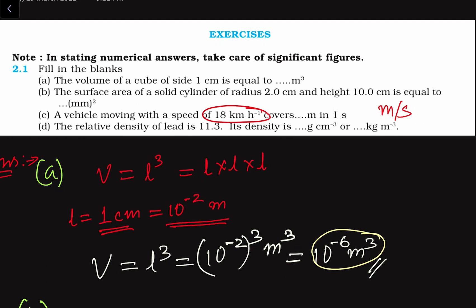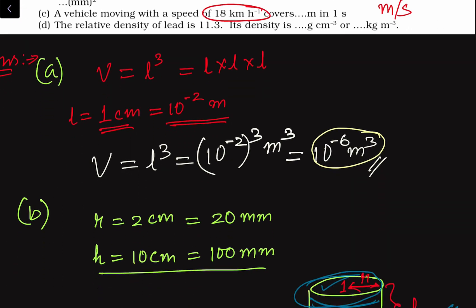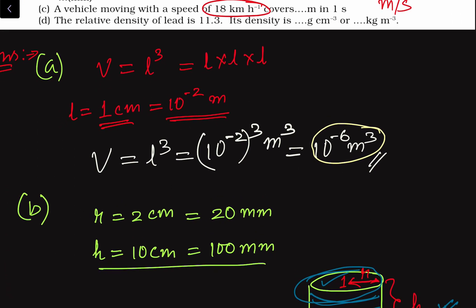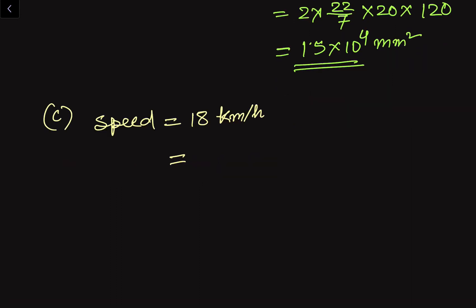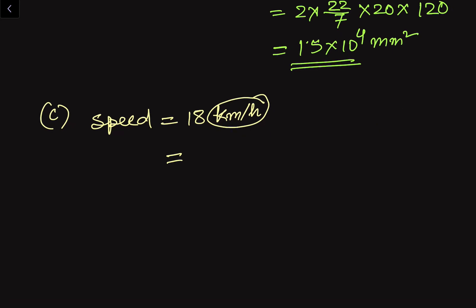If we convert the speed in kilometer per hour into meter per second, we can find out the distance traveled in one second. In the third part, we are given speed = 18 kilometer per hour. We have to convert this unit from kilometer per hour into meter per second.